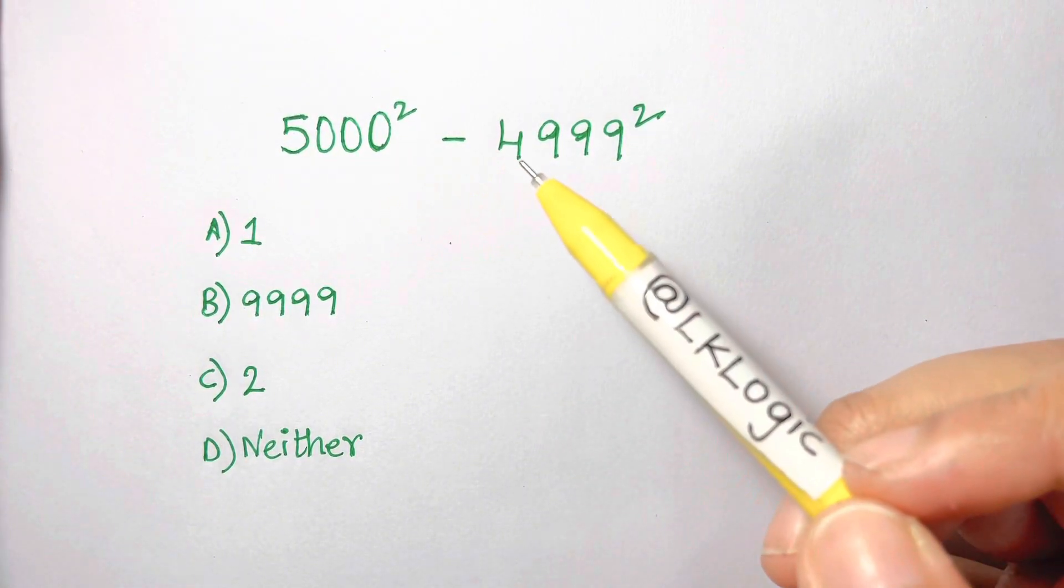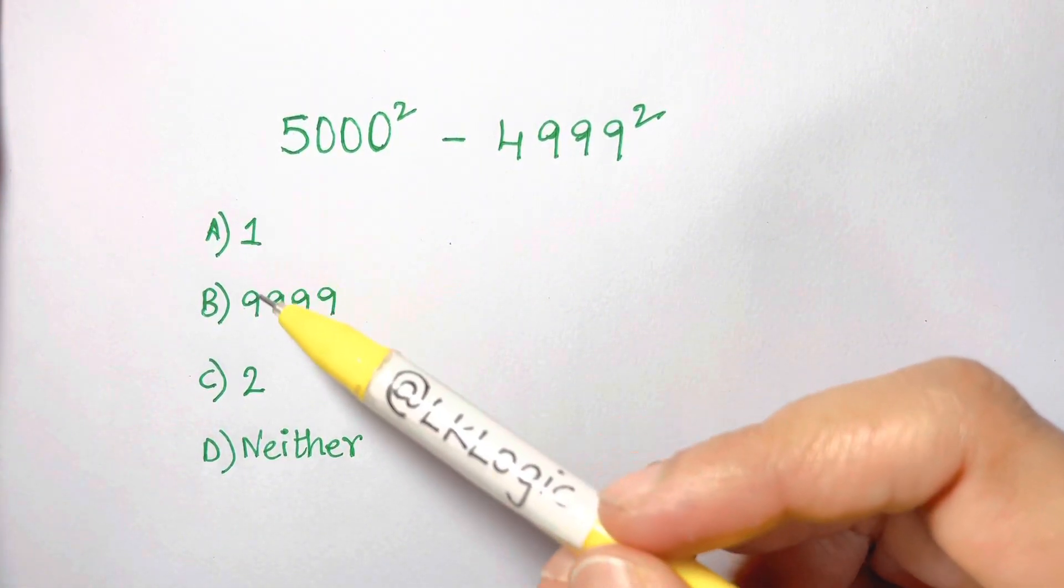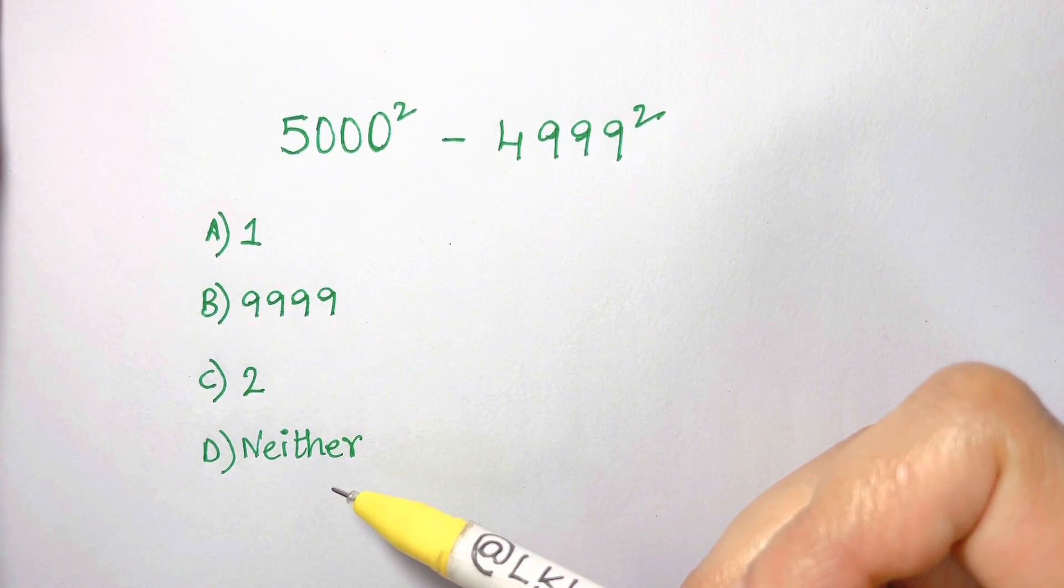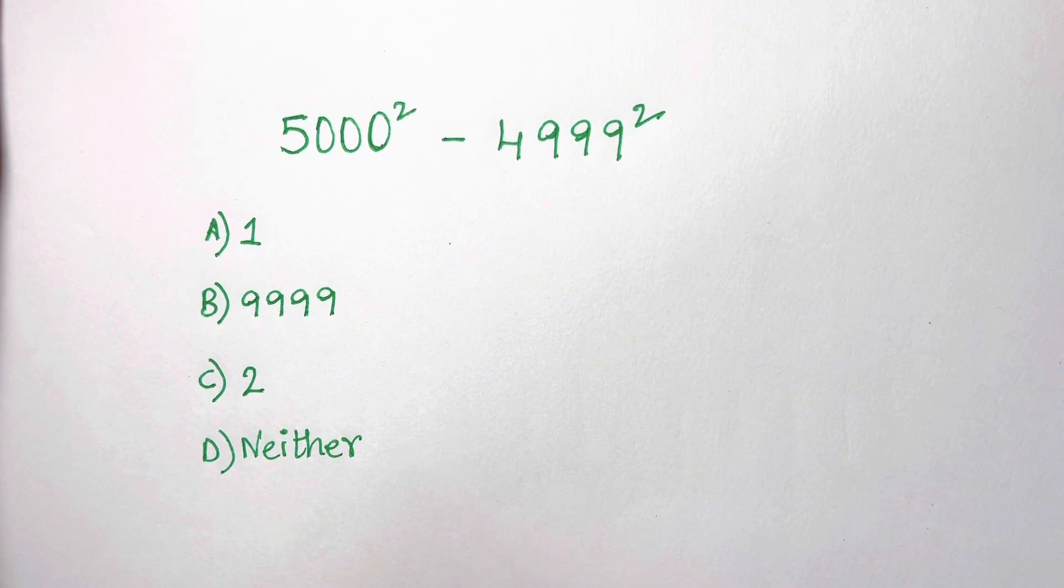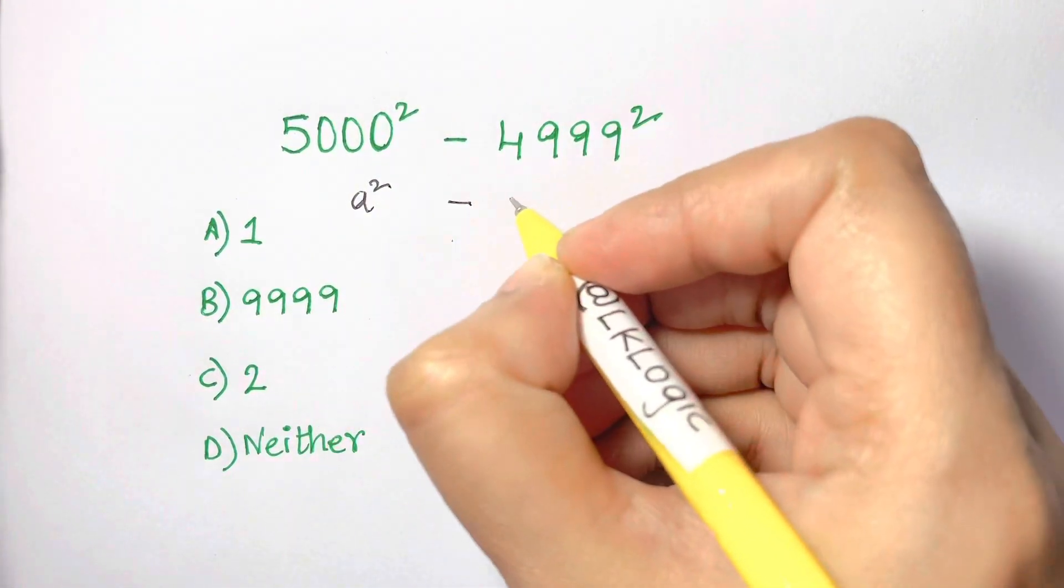Now there are four options given to you: 1, 9999, 2, and neither. So let's solve for this. I'll give you a clue. What we're going to use here is a squared minus b squared.